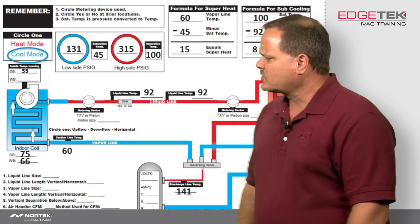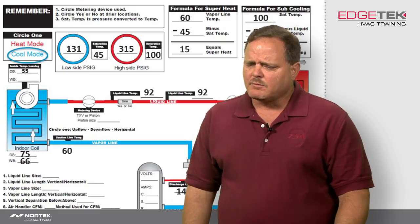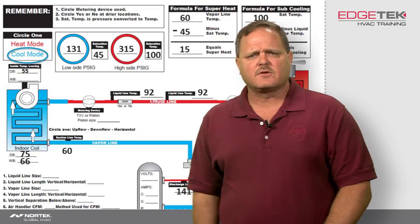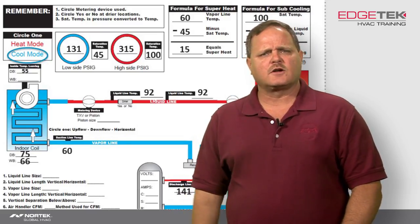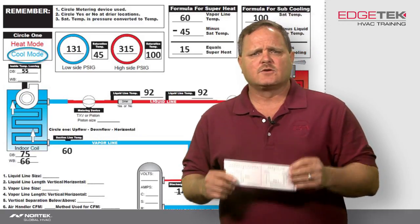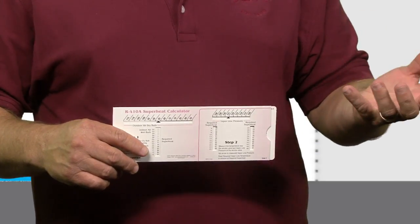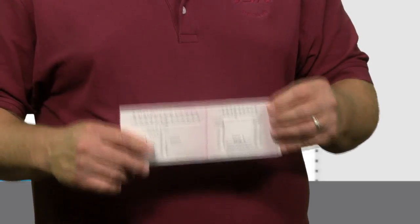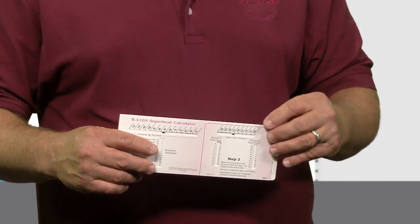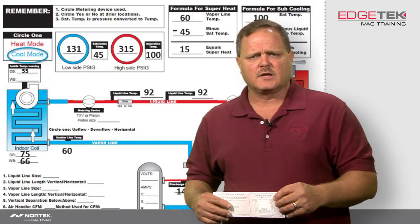The examples we're talking about today are going to be with a piston metering device. In order to troubleshoot a piston metering device properly, you've got to know what that required superheat is. The only way you're going to get that required superheat is by using a slide calculator. You can use Emerson's Charge app — there are a couple different ways to do it — but you've got to have that indoor wet bulb temperature and that outdoor dry bulb temperature, and then under the load conditions, be able to determine what your required superheat is.